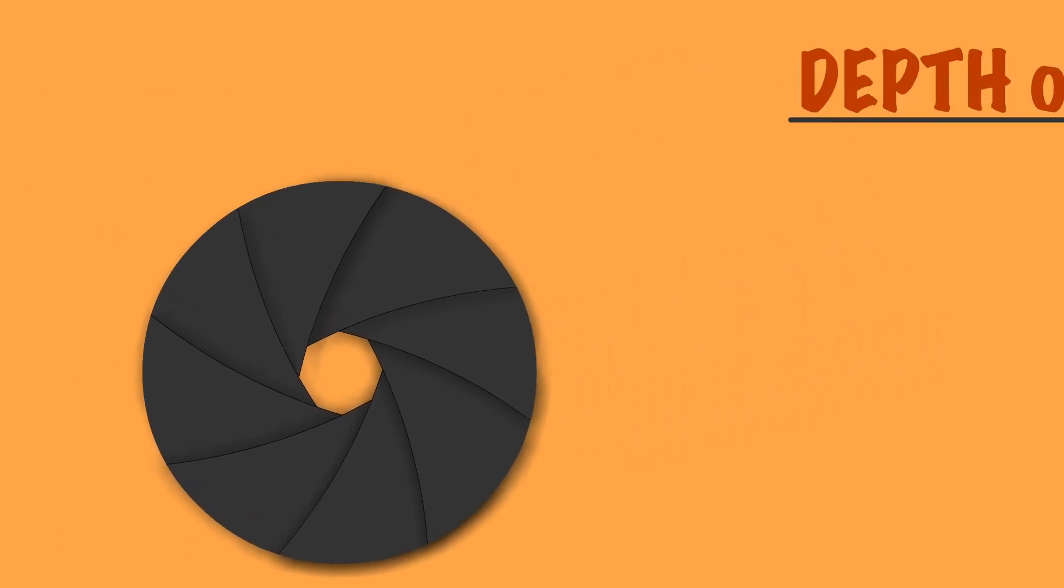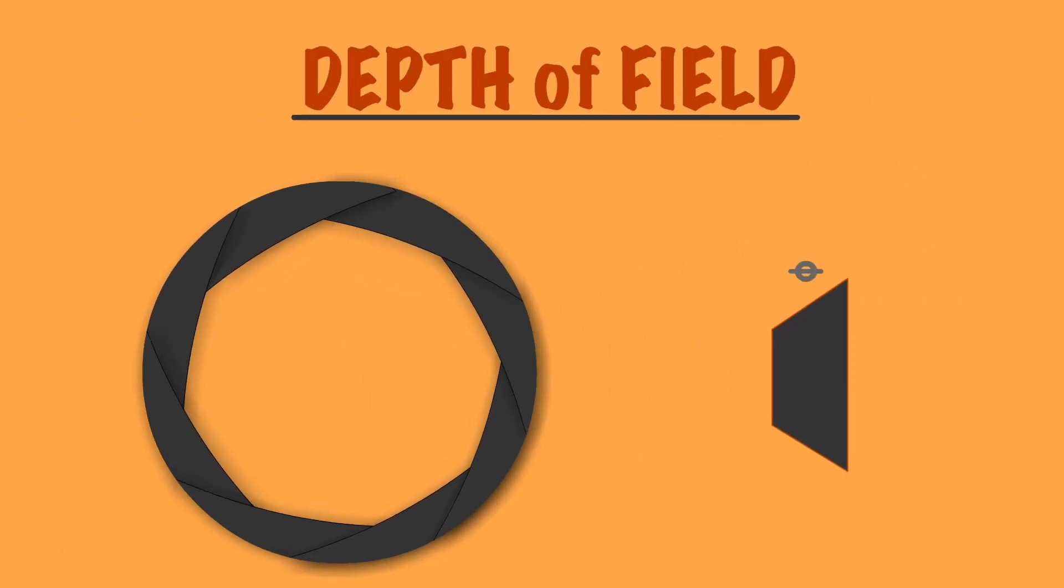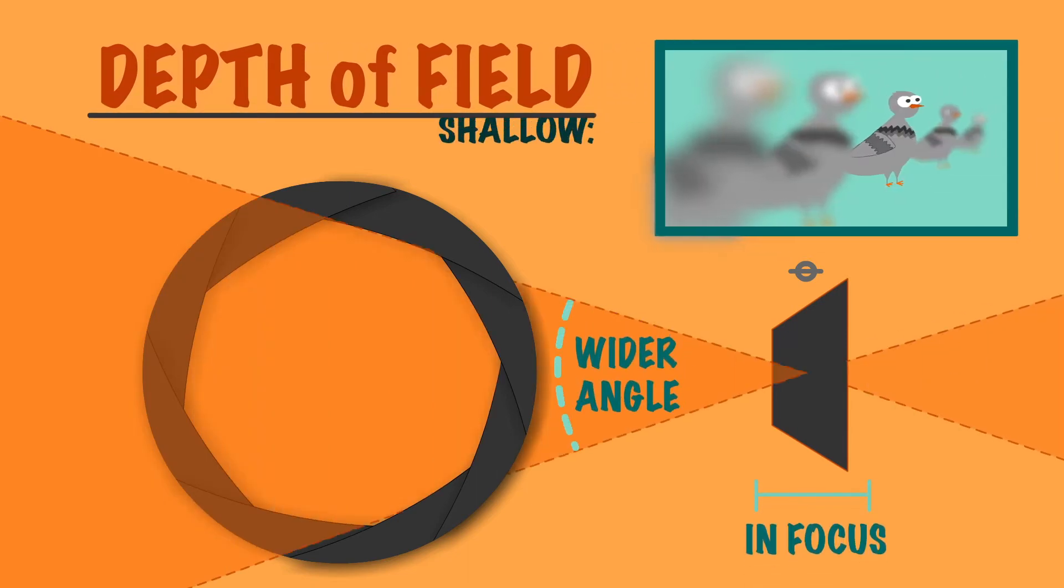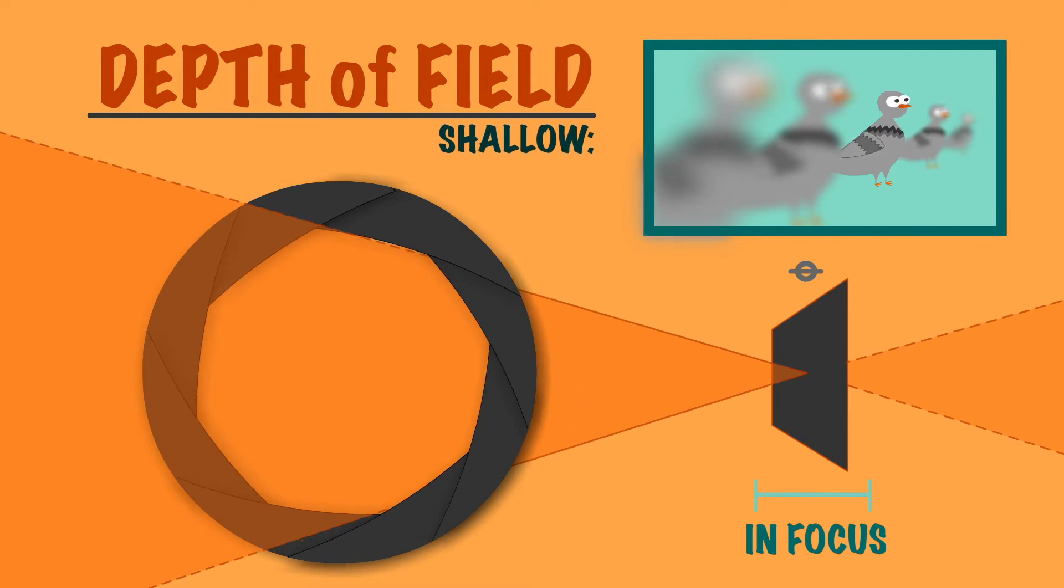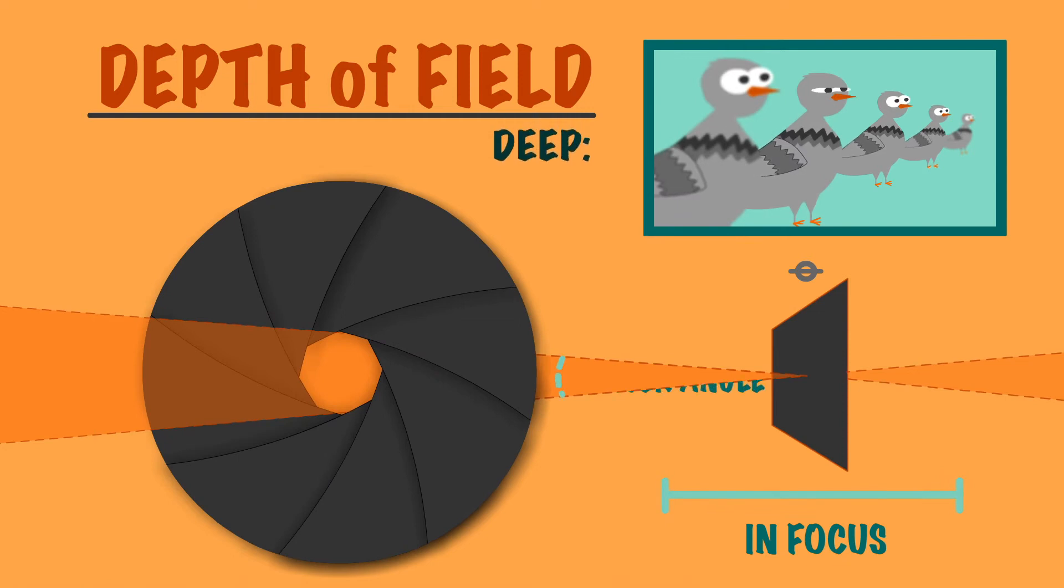Aperture also affects the depth of field. The wider the angle of light coming into the lens, the more out of focus the image will look. Therefore, if you close down the iris, you make the angle of light refracted smaller, and something that is blurry will then appear more in focus.